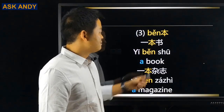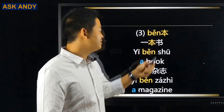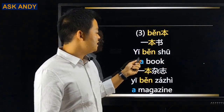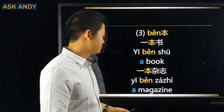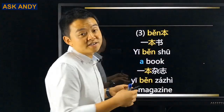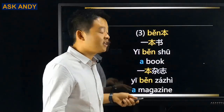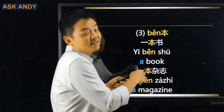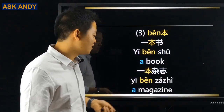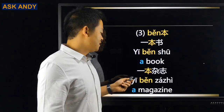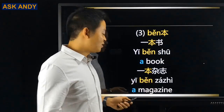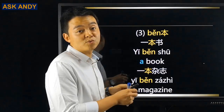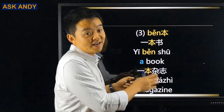Number three: 本. For example, 一本书 — a book. This one is different from English, which is a bit tricky. But if you hear it, you need to know that 本 is a measure word. Also 一本杂志 — a magazine. So 本 is the measure word for books and magazines.